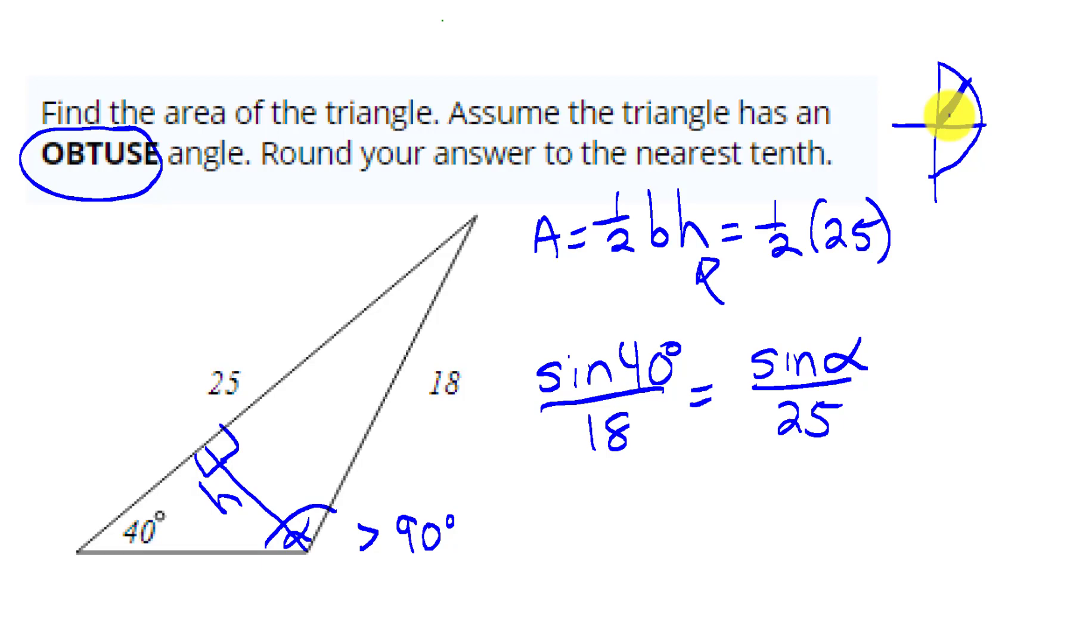So when we find that angle, we're going to have to then find a second angle. This is an ASS triangle, and there are two possible triangles, and we need the second one with the obtuse angle.